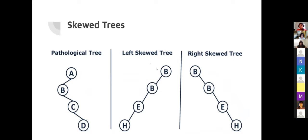Skewed trees are ones where the tree doesn't have its subtrees filled fully — either the right or left subtree is always missing. A left-skewed tree always has the right part missing for every node; a right-skewed tree always has the left part missing. Any skewed tree of height two or more is always unbalanced.